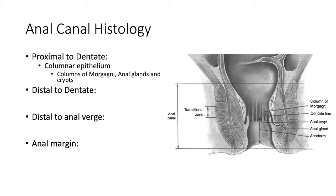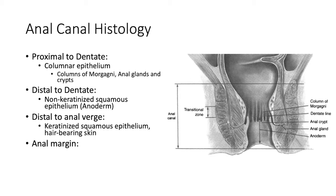It's non-keratinized squamous epithelium, and that'll often be referred to as just anoderm — that's the medical term for it, referring to the squamous portion of the anal canal. Distal to the anal verge, that is also the line at which you start to see the hair-bearing skin of the anus or anal margin. Does anyone know what defines the anal margin? Yeah, it's a five-centimeter circumferential area.